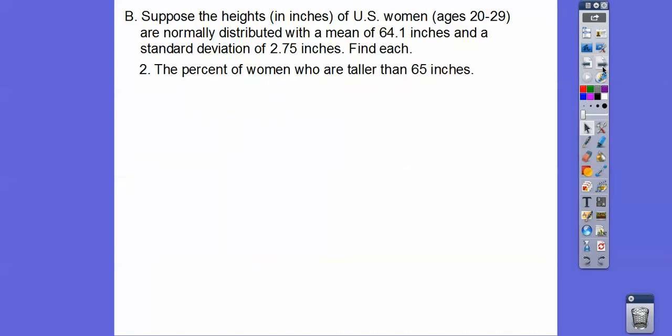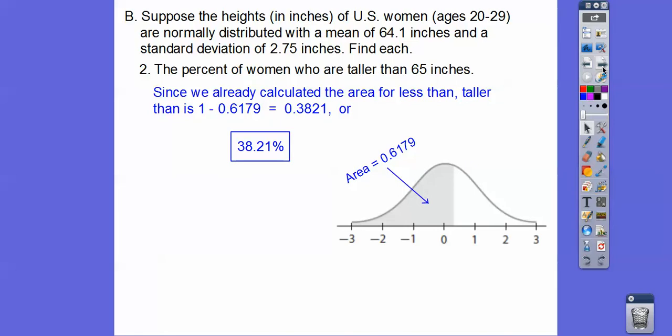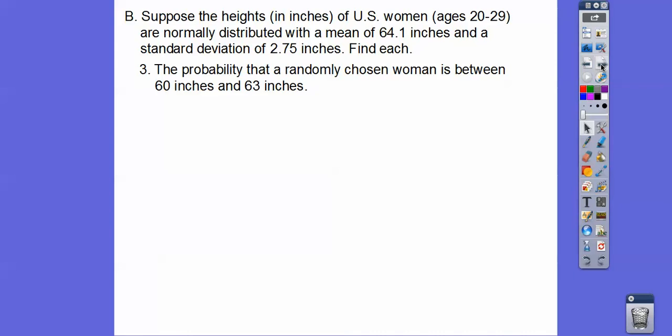All right, how about this? The percent of women who are taller than 65 inches. Well, we found out who were shorter than 65 inches was that. So to find out who's taller would be this side over here. So we would shade this side. This is the side that we want right there, and we do 1 minus that. So 1 minus that is 38.21%.